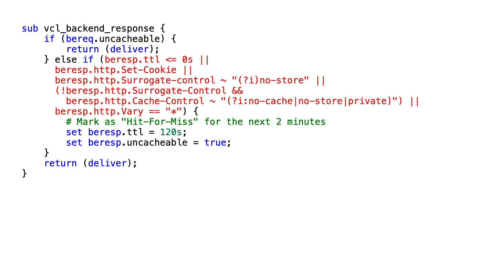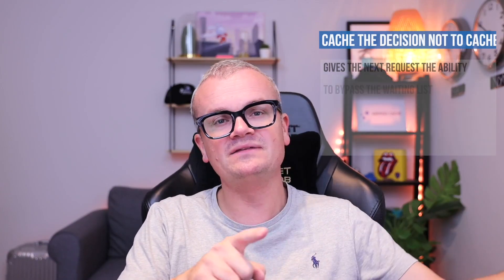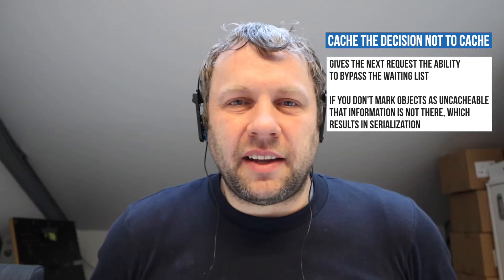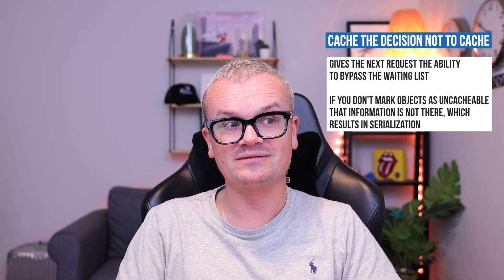This is necessary because if you don't do that, Varnish will serialize the request to the backend trying to get a cacheable response. But when it fails again and again, that can reduce performance for subsequent requests. In VCL terms, that is setting bresp.uncacheable to true, saying that the response is uncacheable. So ironically, we're caching the decision not to cache, to ensure the next request will bypass that waiting list. If that information is not there, you're serializing — you're in the queue waiting for your turn because you falsely believe the response would be cacheable.